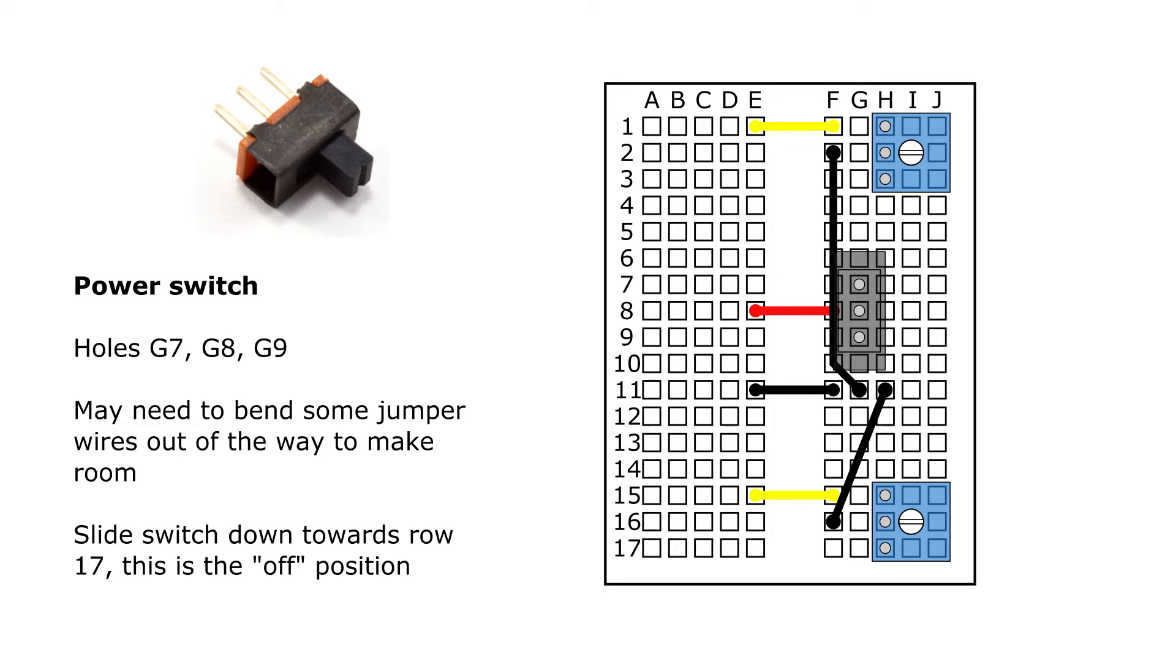Next, you're going to connect the power switch, which has three pins to holes G7, G8, and G9. The switch is symmetric, so it doesn't matter if you flip it upside down, it'll work the same in either direction. And again, that one long black jumper wire from the previous step might be kind of in the way, so you can bend that out of the way a little bit if necessary. And then slide the switch down towards row 17, or towards the bottom of the breadboard from this view, which is the off position, just so you don't accidentally turn the robot on when you're connecting things later.